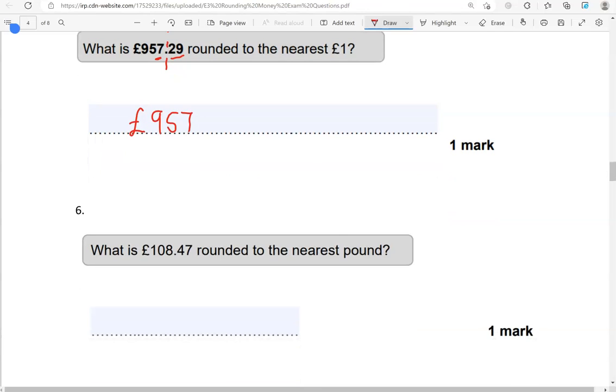What is £108.47 rounded to the nearest pound? Again, that's the pounds column. So this will be the cut-off point. Looking on the right, we've got 47 pence, so less than £50. That's why we're going to keep this as £108.